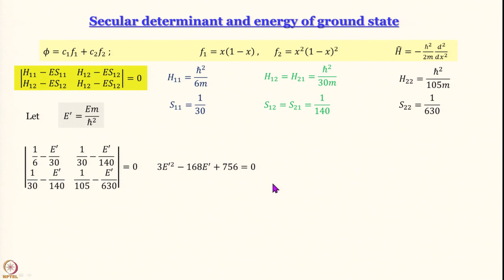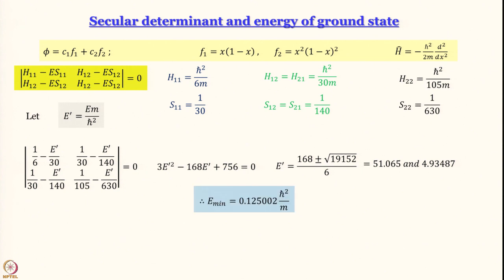Using the quadratic formula, E' equals (168 ± √19152) / 6, which gives 51.065 and 4.9348. Recalling that we set L equal to 1, the minimum value of epsilon_0 turns out to be 0.125002 h-bar²/m. That result will be meaningful when compared with the exact result in the same units.